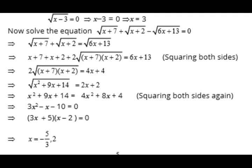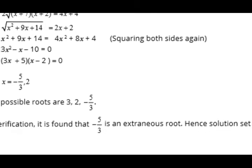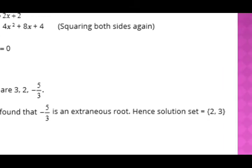We move all values to one side and factorize. To make a product of 30 and a sum of 1, the factors are 6 and 5 (i.e., −6 + 5 = −1, adjusted accordingly). Do all steps here. The roots found are x = 3, x = 2, and x = 5/3. On verification, 5/3 is an extraneous root. Therefore the solution set is {2, 3}.